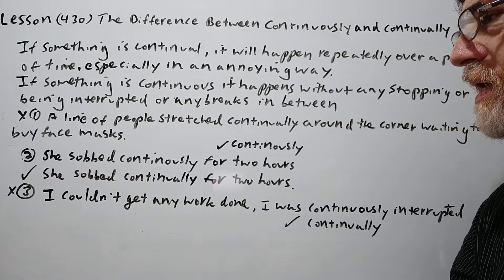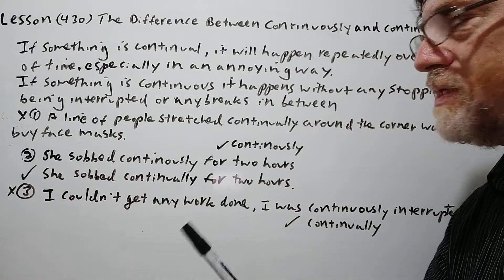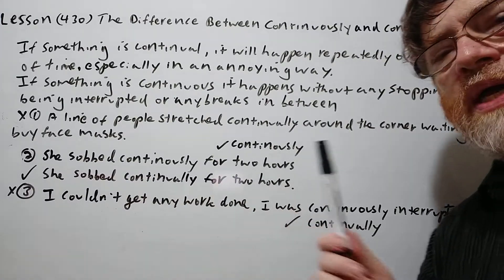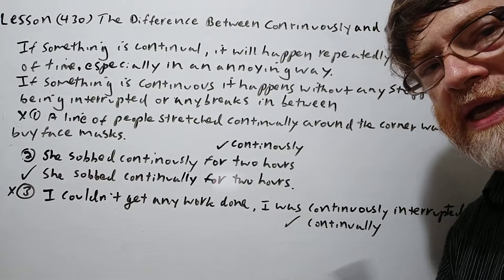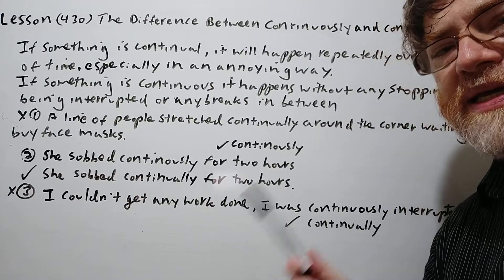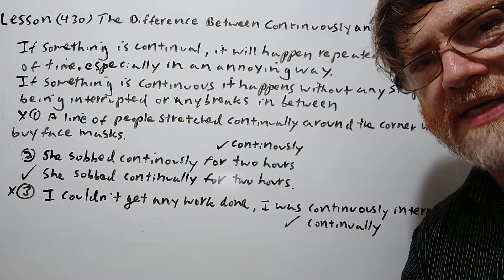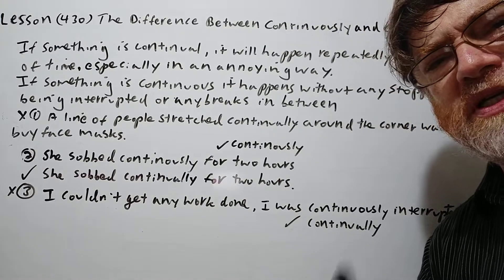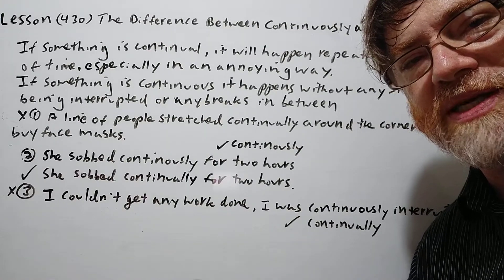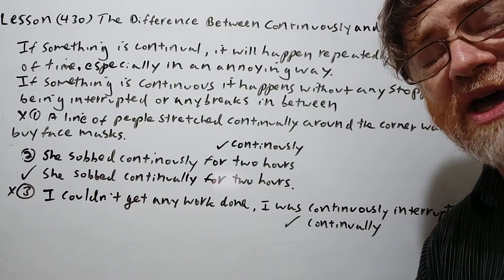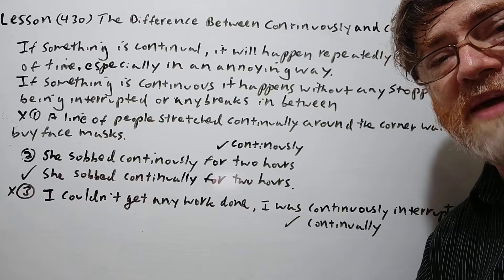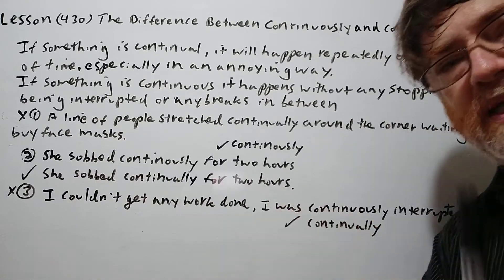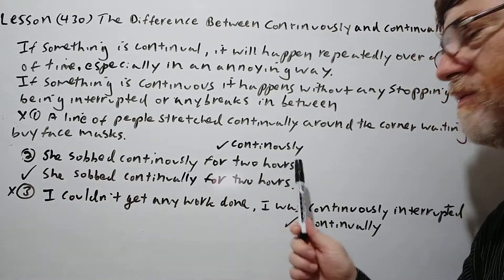Number two is a little trickier because in some ways you might be able to use either. "She sobbed continuously for two hours." If you wanted to emphasize that there were no breaks and she didn't even stop for a few seconds, you might use continuously. But in most cases you should probably use continually, because usually people are annoyed by this — especially if it was a child sobbing for several hours in a row, it might get on your nerves after a while. So she sobbed continually for two hours is probably better.